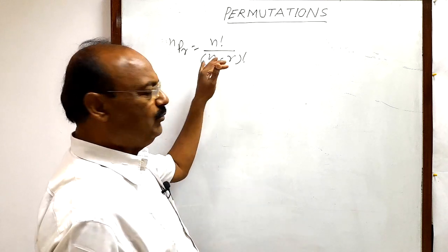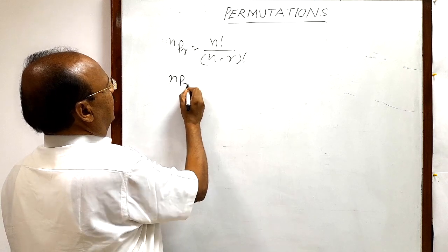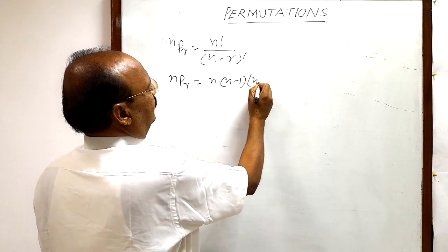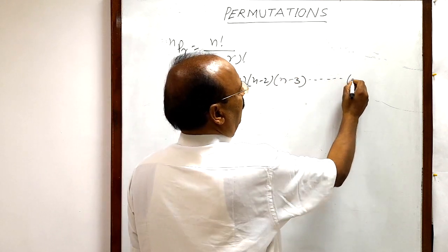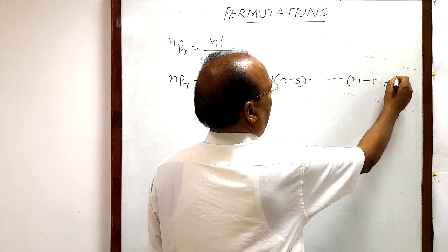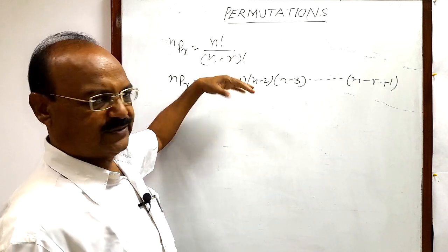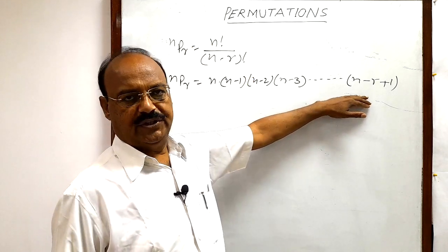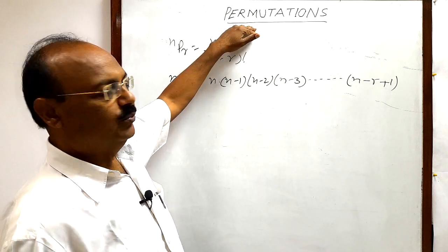Another formula, the same formula in another form, is written as NPR equals N into N minus 1 into N minus 2 into N minus 3 up to N minus R plus 1. Both are the same formula. When this factorial has been expanded and simplified, we will get this expression. And this is the formula for permutations.